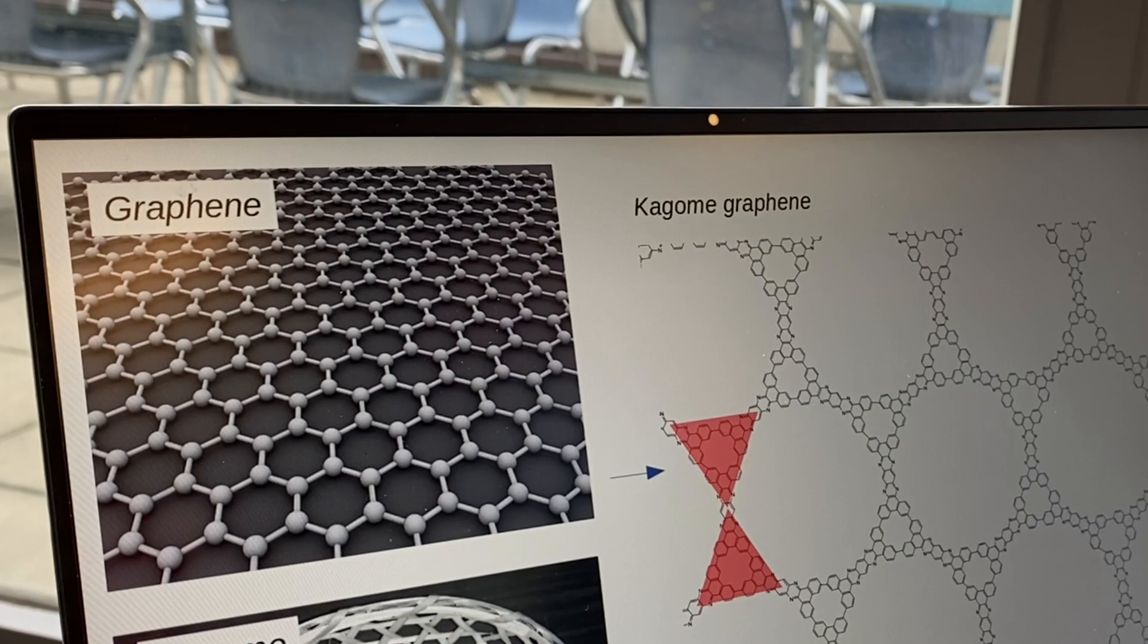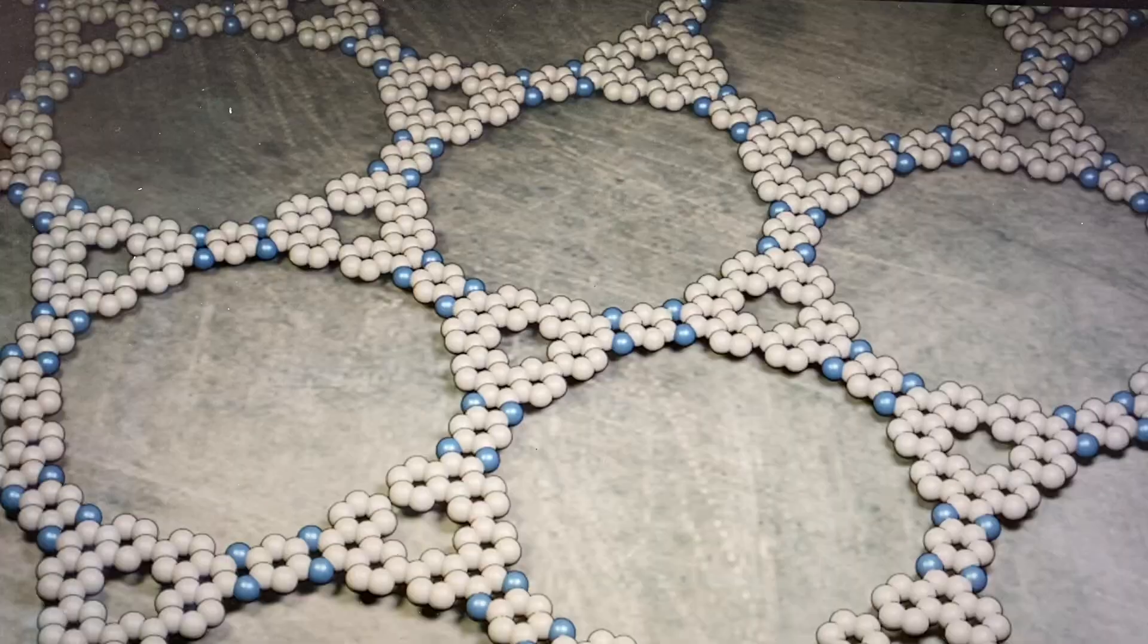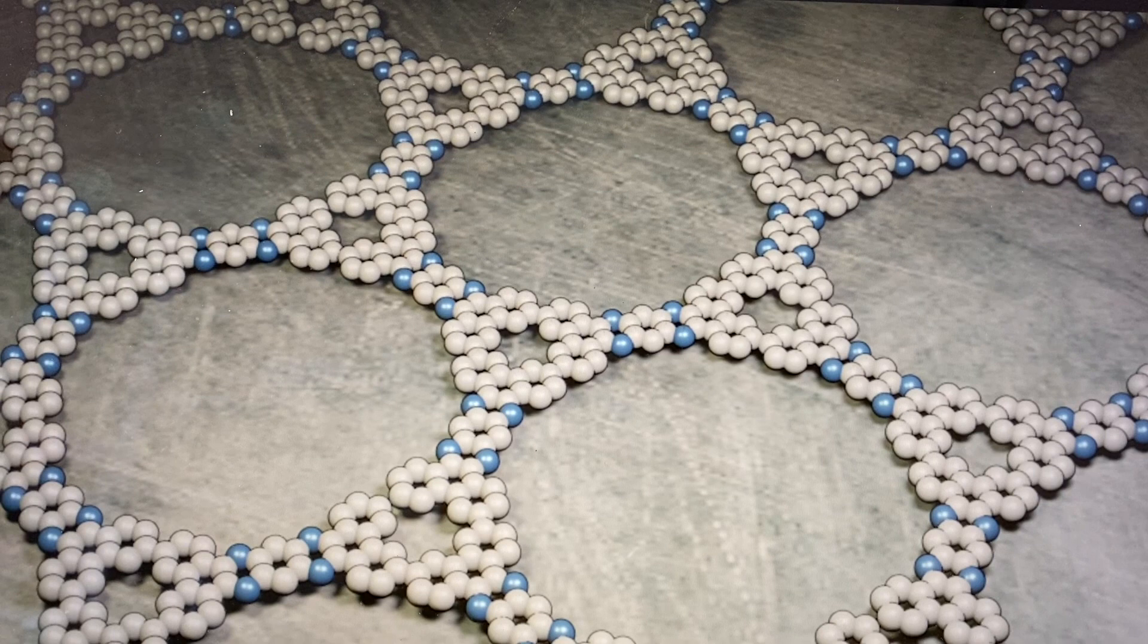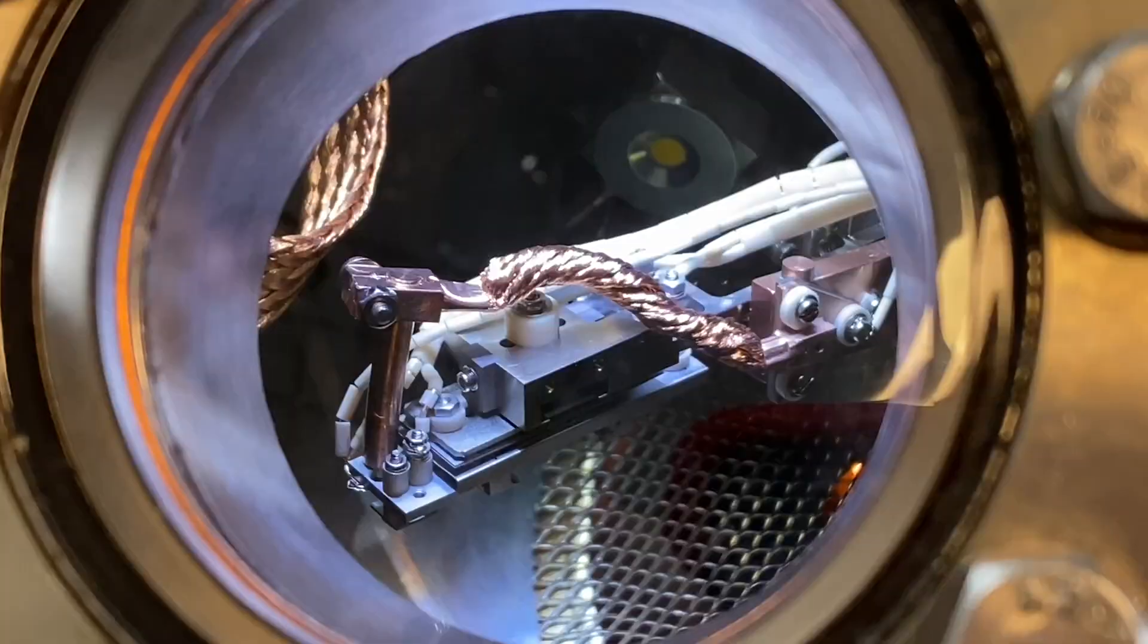What makes Kagome graphene interesting is its properties as quantum materials. Graphene is known to conduct very well electricity along its plane. Graphene in the Kagome pattern will modify its electronic properties.